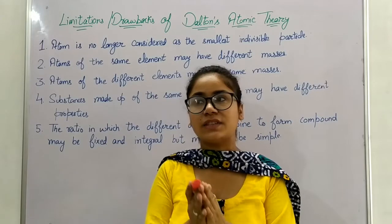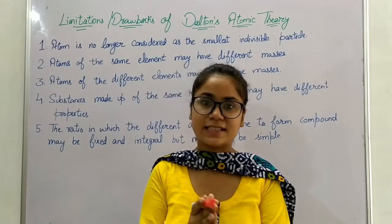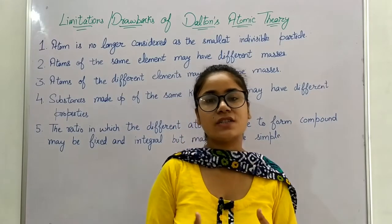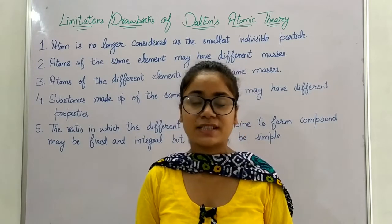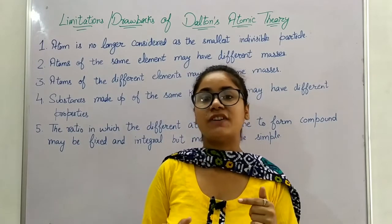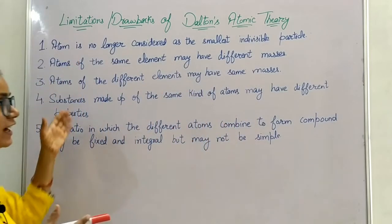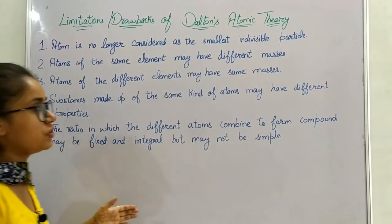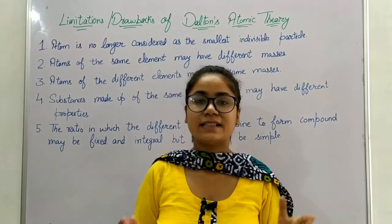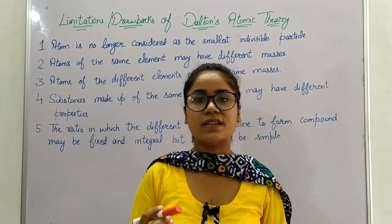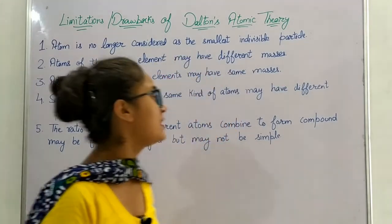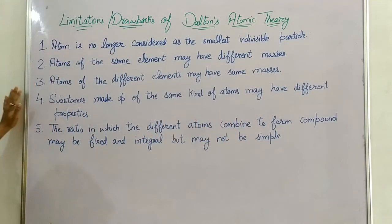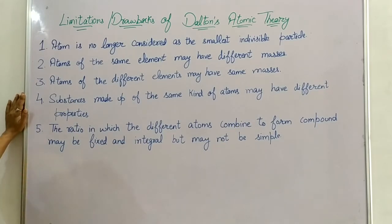In this theory he also told us about the law of conservation of mass and the law of constant proportions. He later modified this theory — this is the modified atomic theory of John Dalton — in which he also gave us knowledge about the law of multiple proportions. So what are the limitations or drawbacks of the atomic theory?